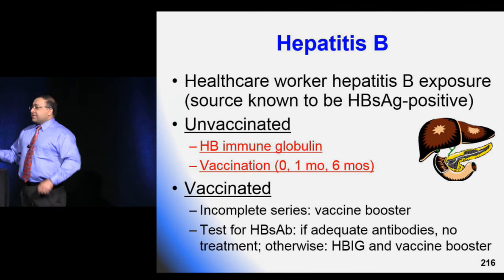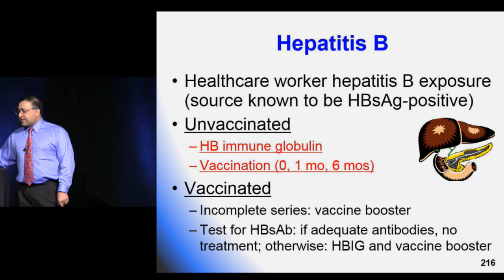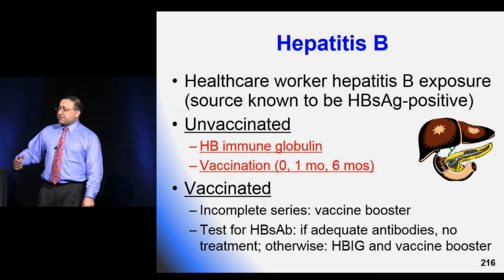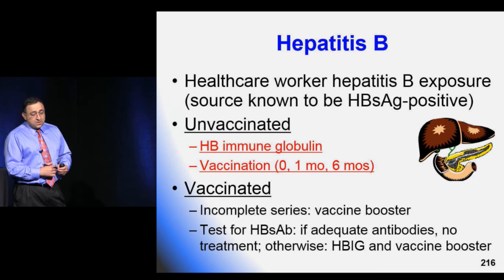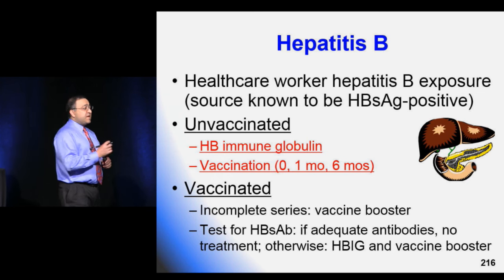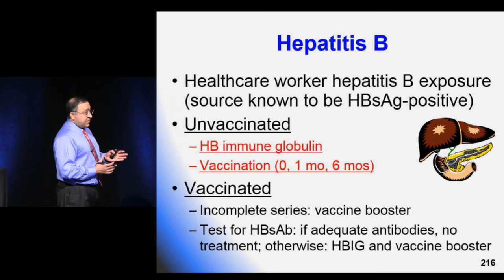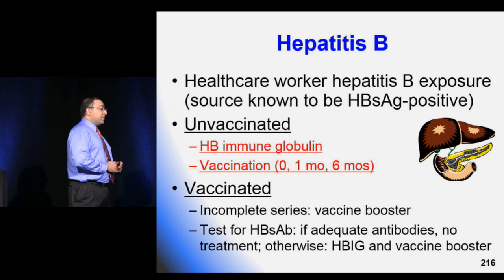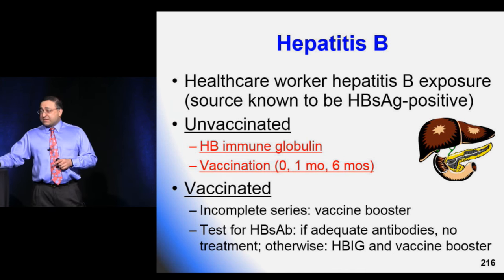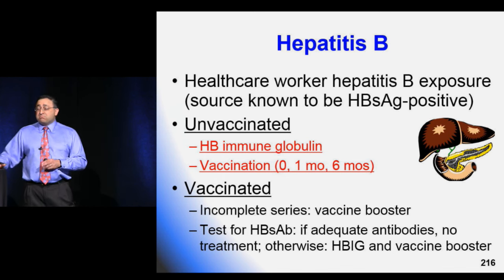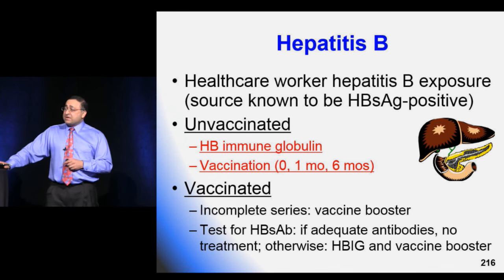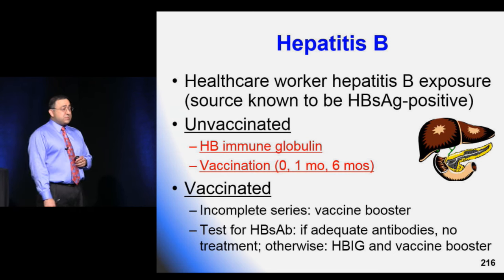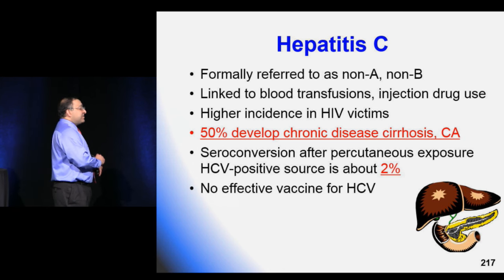A common board scenario: a nurse gets a needlestick from a Hepatitis B positive patient. Test them for adequate hepatitis B antibodies. If they never got the vaccine or don't have adequate antibodies, they need immune globulin plus the full vaccine series — at 0, one month, and six months. Hepatitis C is worse than Hepatitis B: 50% develop chronic carrier state and chronic problems. Many clinicians fear Hepatitis C more than HIV.